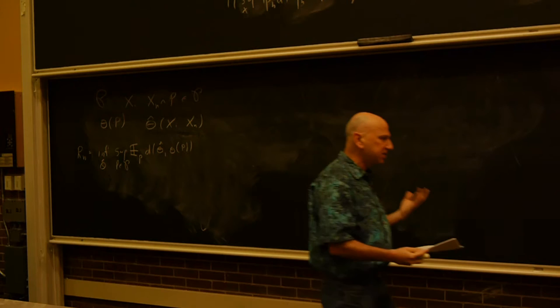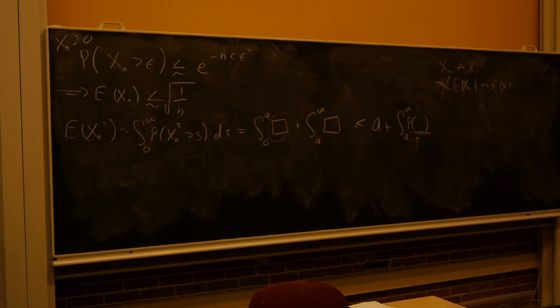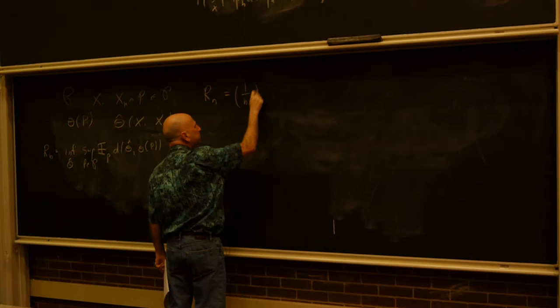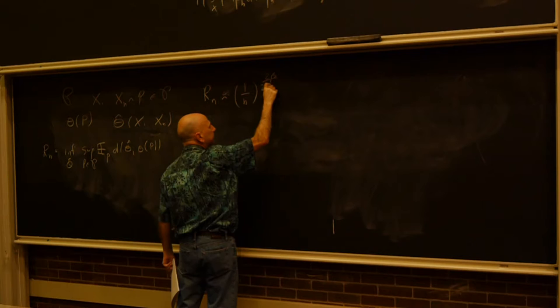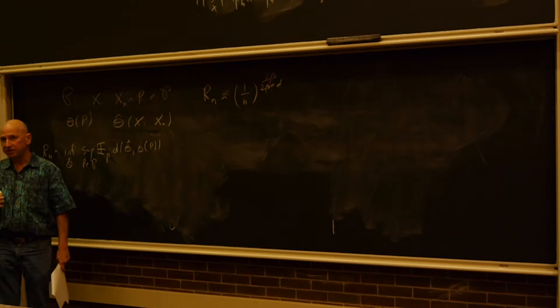We've seen parametric examples like estimating a normal distribution, where the minimax estimator of the mean is X-bar. We've talked about regression and already mentioned minimax estimators. The question is how do we know this? How did Ryan and I know that for most regression and density estimation problems, we get minimax rates like n to the minus 2-beta over 2-beta-plus-d, where beta is how many derivatives we're assuming and d is the dimension? I'm going to show you how we prove these things.